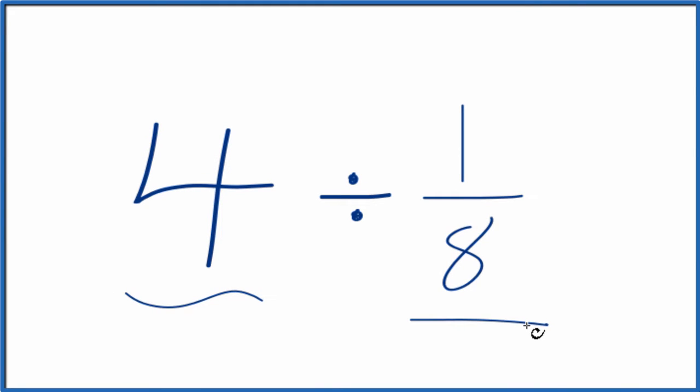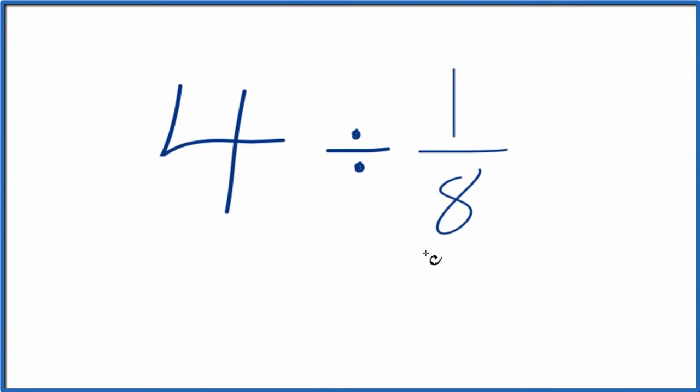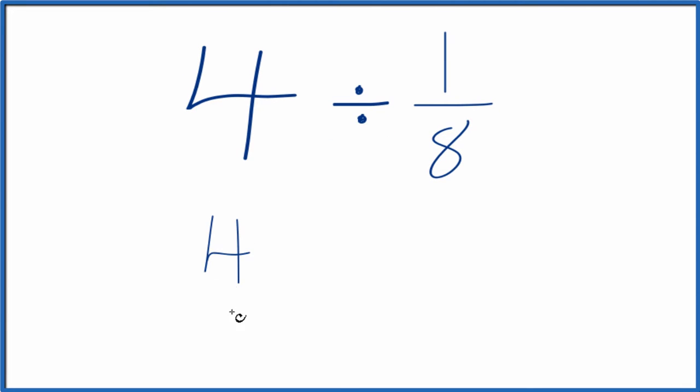If you need to divide 4 by 1/8, this is how you can do it. Let's call this 4 over 1. It's still 4 because we're dividing by 1, but having a fraction will make this easier.